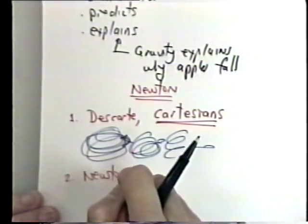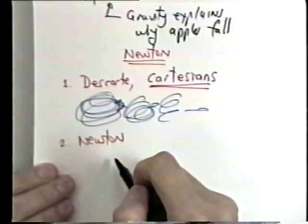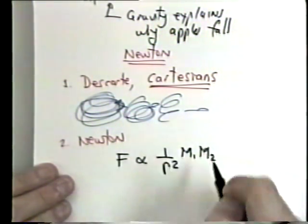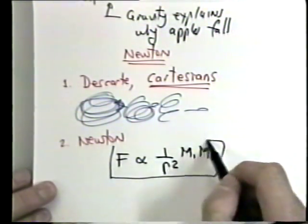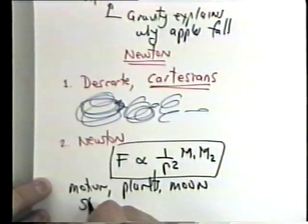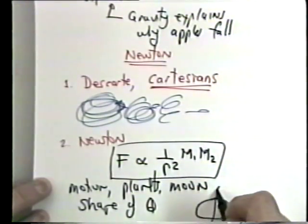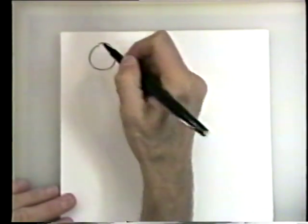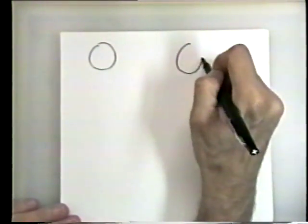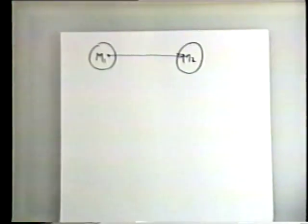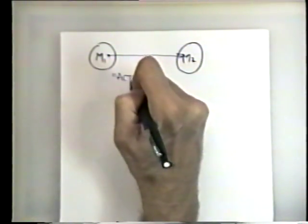Newton was able to write down an equation saying the force on one object was inversely proportional to the distance between the two objects squared, and proportional to the masses of each object. From this, he could calculate the motion of planets in the solar system, the moon, and even the shape of the Earth. But Newton's theory was heavily criticized as a return to medieval mysticism — the problem called action at a distance: how does one body feel the force of another?